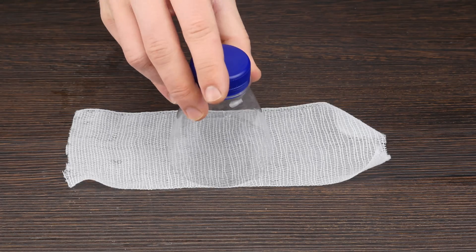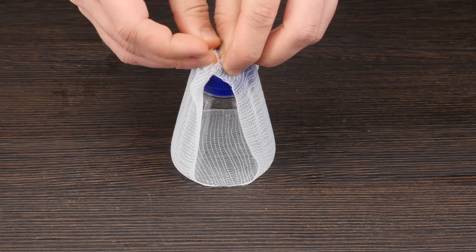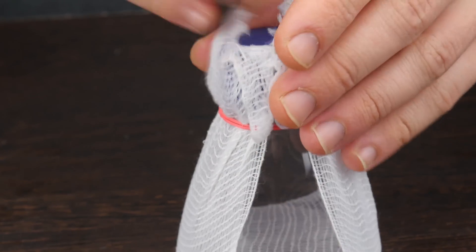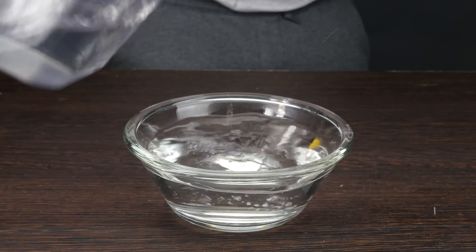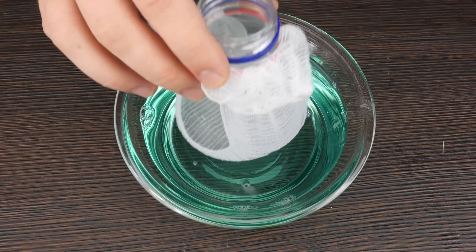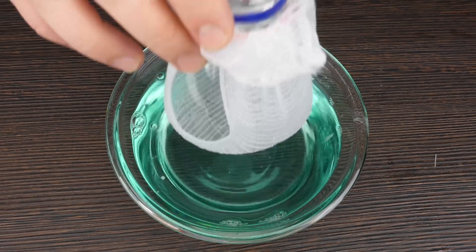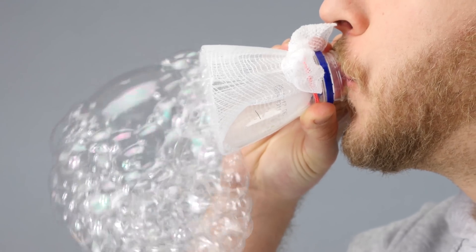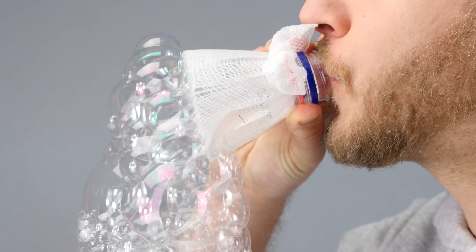Then, take the bandage, seal the opening of the bottle and fasten it all with rubber band. Now, fill the bowl with water and mix it all with washing up liquid. Then, dunk the bottle with the bandage in the water and blow through the opening of the bottle. And that's how you get loads of little bubbles.